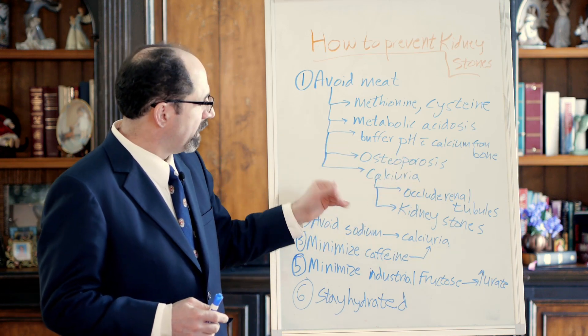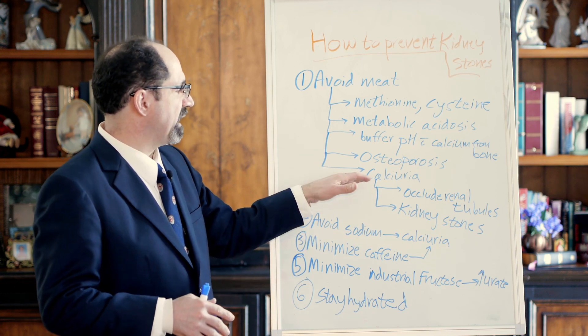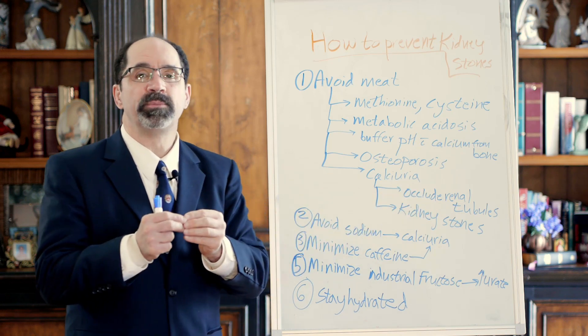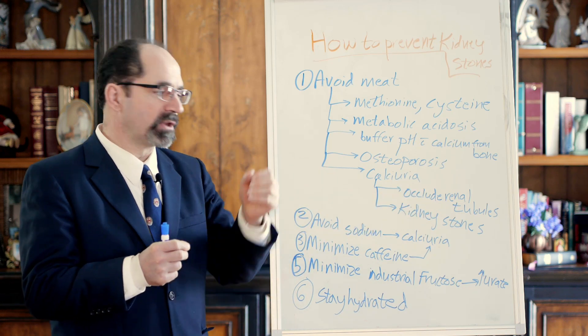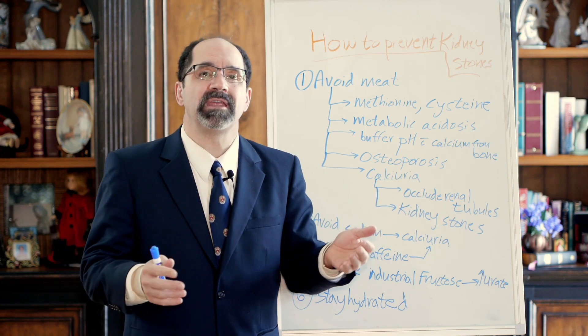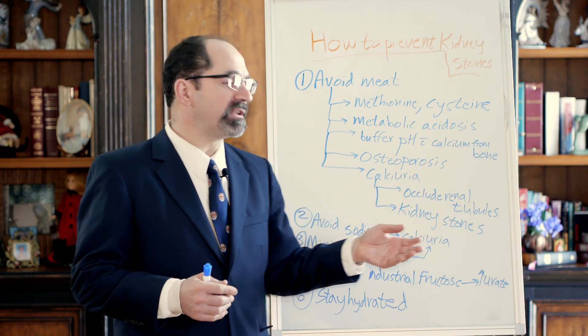Calciuria is the excretion of increased amounts of calcium in the urine. Those can occlude the renal tubules and precipitate in those renal tubules. Small amounts of calcium precipitating can plug up those tubules diffusely through the kidney, and over time will decrease kidney function.